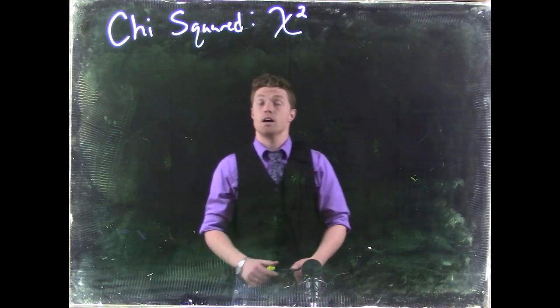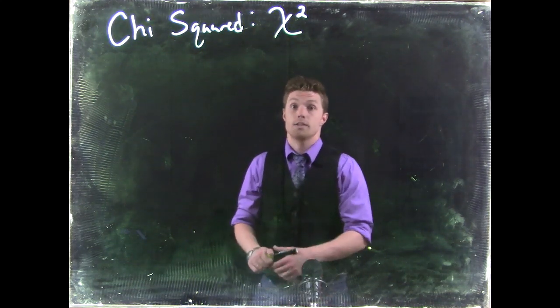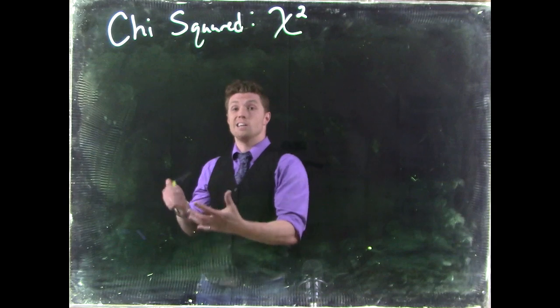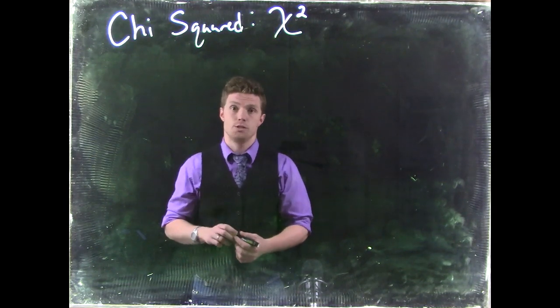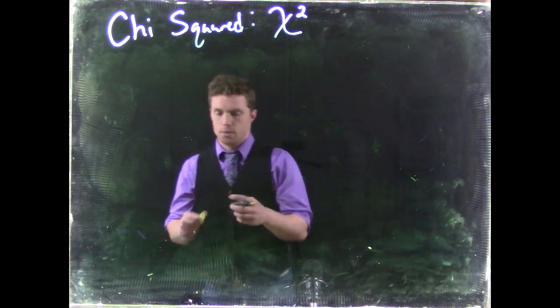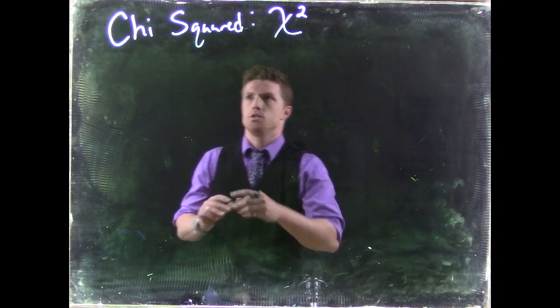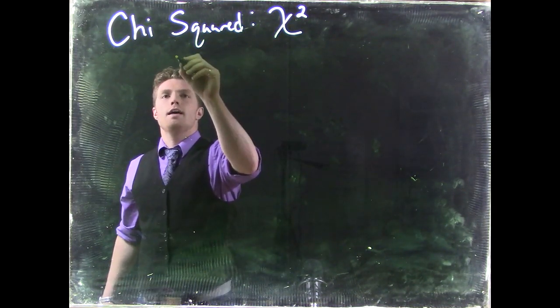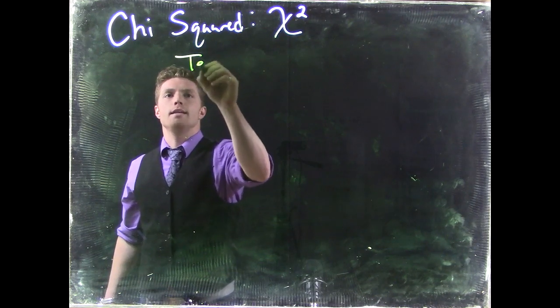Let's talk about another different type of test that we can do with our chi-squared distribution. Another one that we can do is called the test for independence.